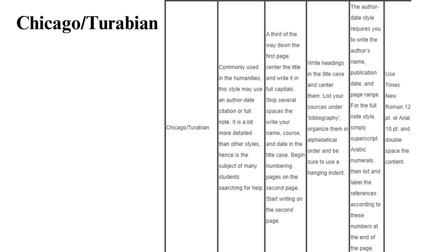Chicago/Turabian, commonly used in the humanities, this style may use an author-date citation or full note. It is a bit more detailed than other styles. A third of the way down the first page, center the title and write it in full capitals. Skip several spaces then write your name, course, and date in title case. Begin numbering pages on the second page. Start writing on the second page; write headings in title case and center them. List your sources under Bibliography, organized in alphabetical order with a hanging indent. The author-date style requires you to write the author's name, publication date, and page range. For the full note style, superscript Arabic numerals, then list and label the references according to these numbers at the end of the page. Use Times New Roman 12 points or Arial 10 points and double space the content.